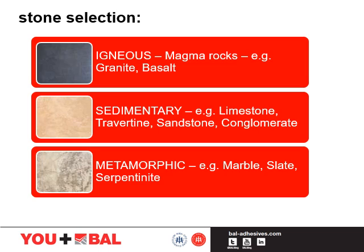Slate might be riven or unriven. Riven slate tends to vary in thickness and, as with uncalibrated stone, the variety in thickness requires consideration for the installation and levelling products that might be required. Some sources of slate may contain oil which can lead to the initial adhesion being lost as the oil migrates to the tile surface. It is always sensible to do a trial area first.